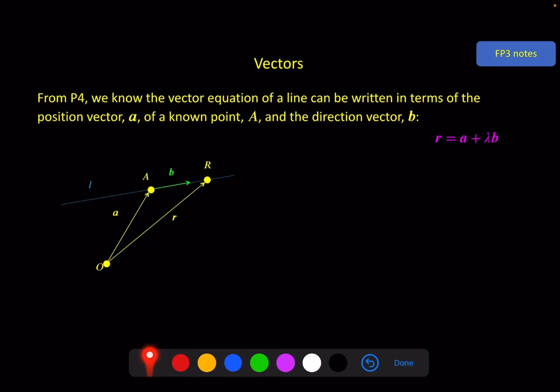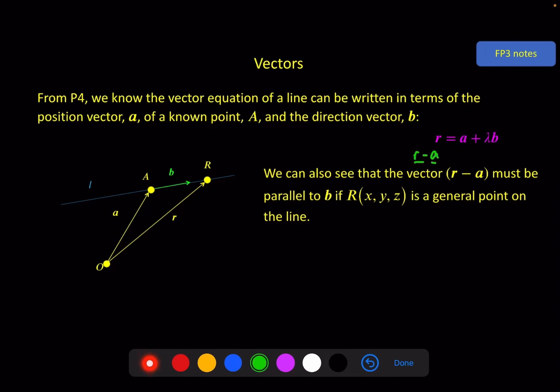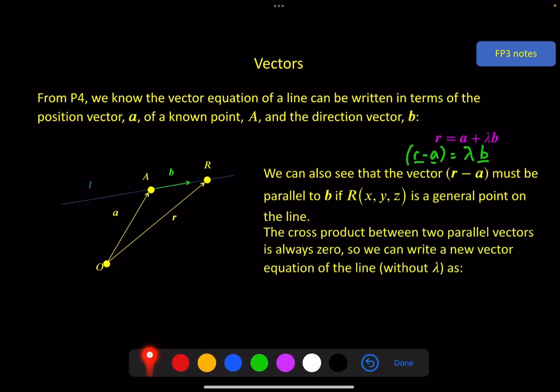So in this video we're going to look at a few other options. Because we know from this that r - a must be parallel to the direction vector b because it's all going along the line. Another way of thinking about this is if we take the a algebraically to the other side. We remember that if this answer vector r - a is equal to a multiple of b, then r - a must be parallel to b. And we also know that the cross product between two parallel vectors must be zero. So the vector r - a and the vector b must be parallel, and therefore if we do the cross product of these, the answer must be zero.